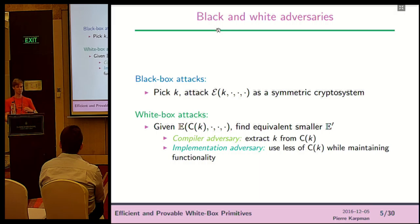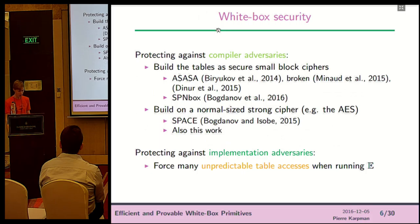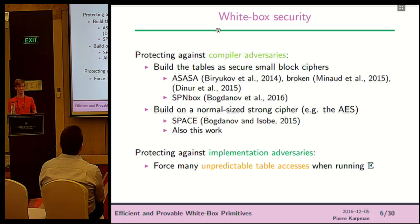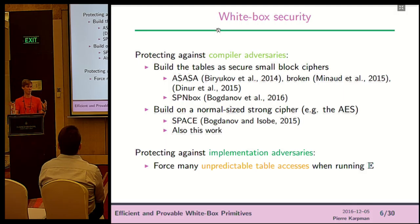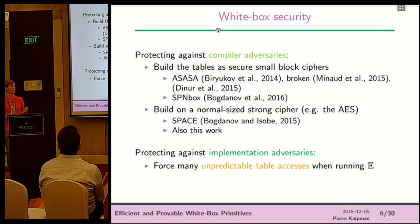So there are two strategies to decrease the size of the implementation. This work is about building secure systems, not attacking. Against compiler adversaries, there are two approaches. The first is to build dedicated block ciphers and tabulate them — as done for SPN Box and ASASA. An attack then is to break the small block cipher using symmetric cryptanalysis. ASASA was broken; SPN Box hopefully will not be.